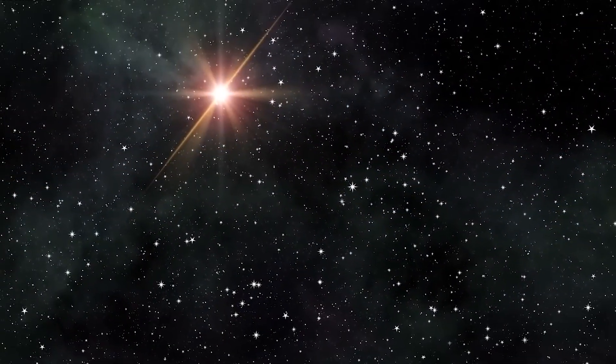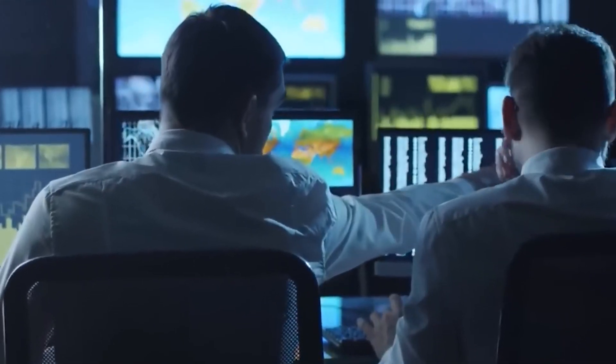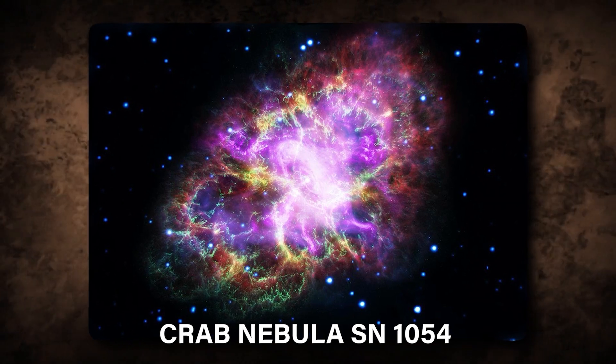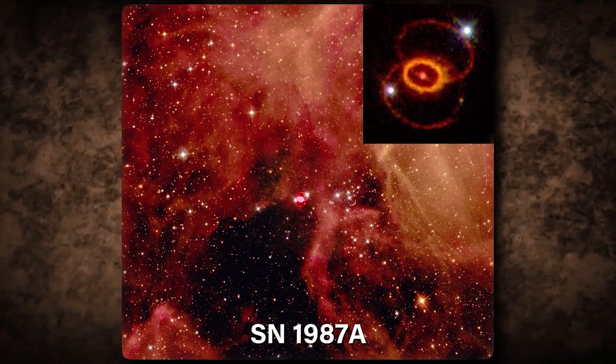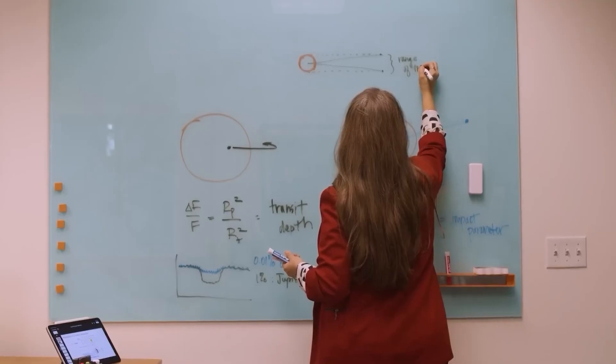To anticipate the effects of Polaris's future transformation, we can draw parallels with documented supernova occurrences like the Crab Nebula SN1054 or SN1987A. By examining resulting phenomena such as the formation of nebula and the release of cosmic rays, we can gather valuable information.